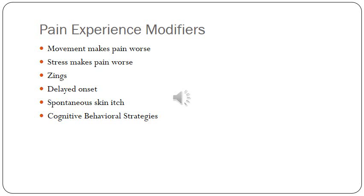Pain of delayed onset basically means you don't get any symptoms for days or weeks. You may get pain and then it goes away for a while — it describes the onset of pain. Spontaneous skin itch deals with itching over skin zones in a painful area; some patients describe a prickly or strange feeling on the skin as it relates to their pain experience.